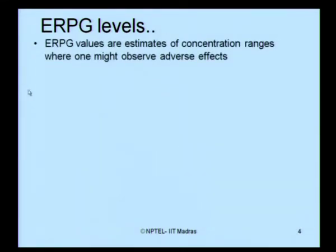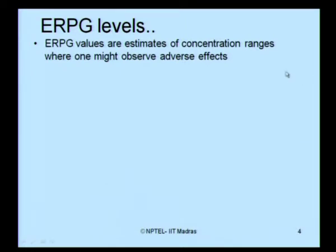You may recall that in the last lecture we discussed emergency response planning guidelines, which we call ERPG. ERPG values estimate the concentration ranges where one might observe adverse effects. The moment you say adverse effect, subjectivity comes into play. For example, a simple issue of smell — odor — can cause adverse effects in certain health conditions and not in others. Therefore, whenever you say concentration range related to adverse effects on human health, there is high subjectivity involved.